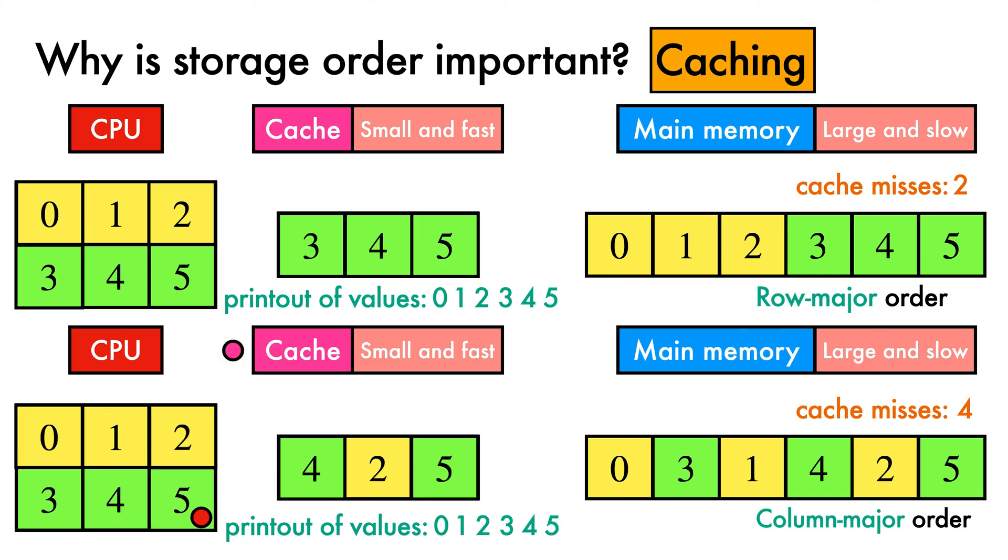The key takeaway here is that the storage order makes a significant difference to execution time. In our example, row major order has produced two trips to main memory, while column major order has produced twice as many. Since the trips to memory are much slower than trips to the cache, the second program will be far slower than the first one.